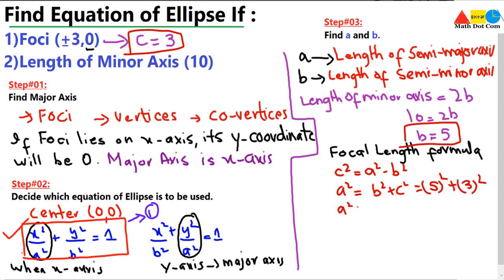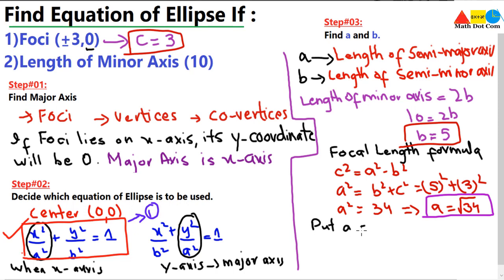So a² = 34, and taking the square root gives a = √34. We now have both values — a² = 34 and b = 5 (so b² = 25) — ready to substitute into equation 1. The final step is to put these values into the standard equation.